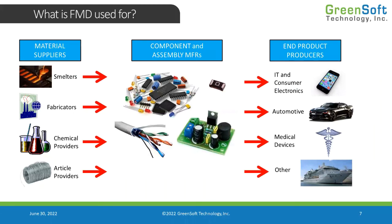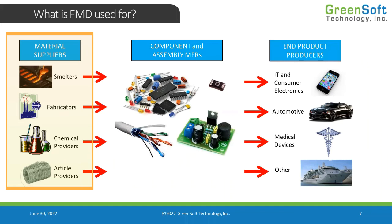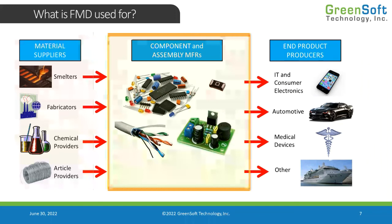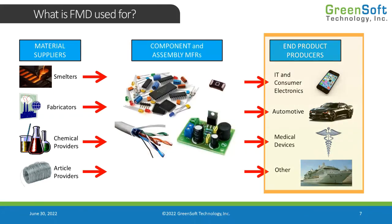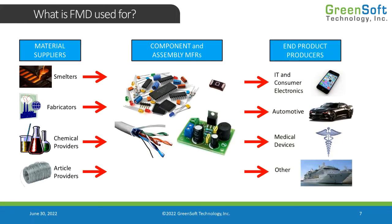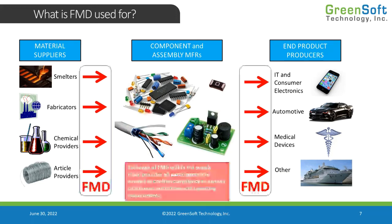When we look at the electronic supply chain, component manufacturers are typically working with material suppliers — getting materials directly from smelters, fabricators, or chemical providers, also simple articles — and combining and fabricating those into components used in final products. Those products are sold to end product producers who are producing automobiles, medical devices, or cell phones. In order for every one of these supply chain actors to meet their obligations, they have to understand the substance content of the materials they're working with. By using the full material declaration approach, we can ensure that information is being transferred through every supply chain actor so that the component manufacturer, the end product manufacturer, and any other supply chain actors in between have the information they need to make declarations or to understand whether their products actually comply with certain regulations.